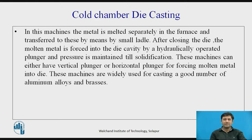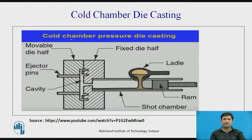These machines can either have a vertical plunger or horizontal pressure for forcing molten metal into the die. They are widely used for casting aluminum alloys and brasses.